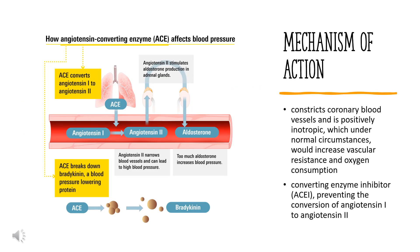Mechanism of Action: Perindoprilat, the active metabolite of perindopril, competes with ATI for binding to ACE and inhibits enzymatic proteolysis of ATI to ATII. Decreasing ATII levels in the body decreases blood pressure by inhibiting the pressure effects of ATII. Perindopril also causes an increase in plasma renin activity, likely due to a loss of feedback inhibition mediated by ATII on the release of renin and/or stimulation of reflex mechanisms by baroreceptors.